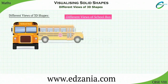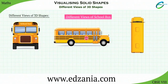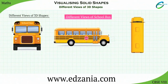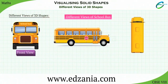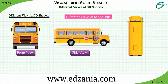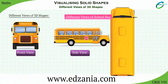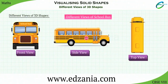You've seen some of the 3D objects and solids. 3D objects are viewed differently from different views. Look at the school bus. The view from the front, the view from the side, and the view from the top. These are the different views of the bus.